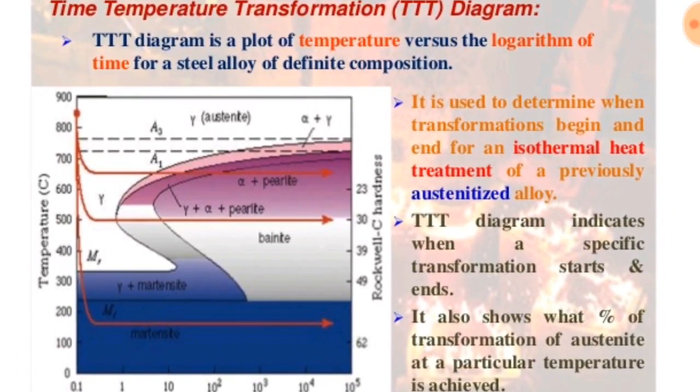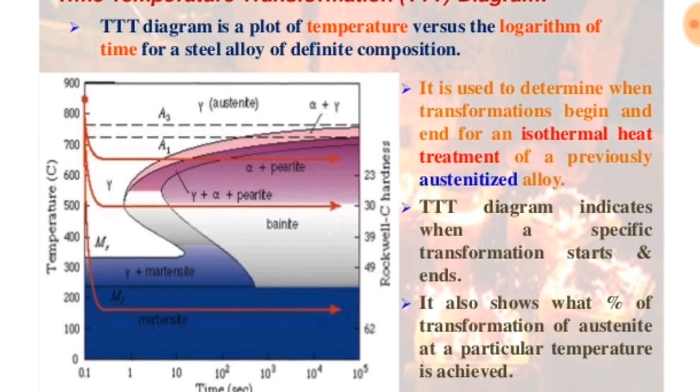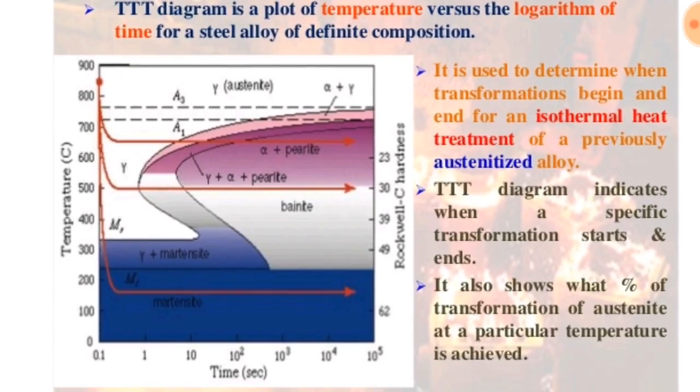That is why it is called an isothermal transformation diagram. The TTT diagram indicates when a specific transformation starts and ends.